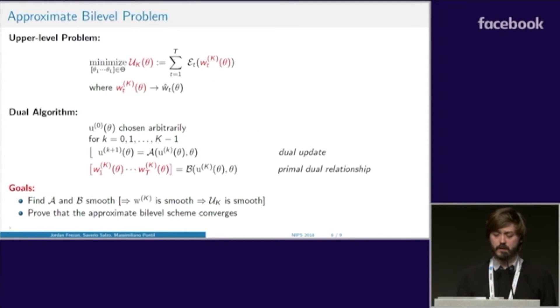This problem is very similar to the one before. The only change is that we have replaced W hat by W K, which is the output of a dual algorithm that converges to W hat. This dual algorithm involves two mappings A and B as follows. First, the dual variable U is updated K times using mapping A, and then W K is obtained using the primal dual relationship B.